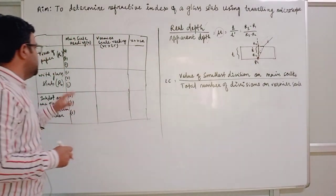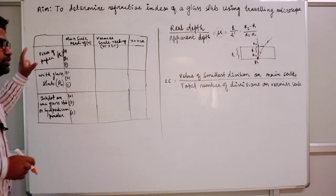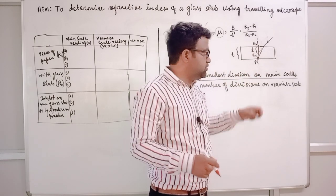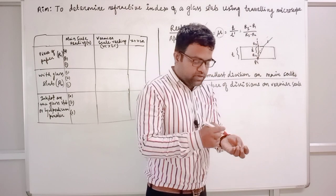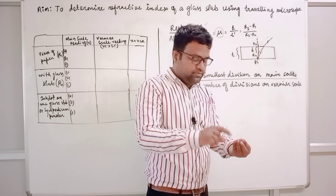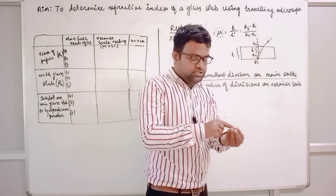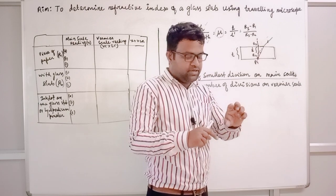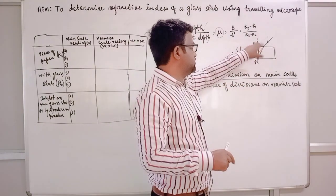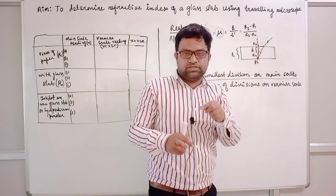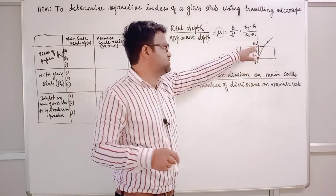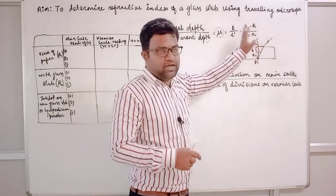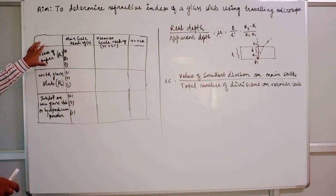We need three points. First, without the glass slab, we focus the point with the microscope — that is R1, the direct object without any medium. When the glass slab is placed, the object appears a little above its original position — that is the apparent height. To calculate the apparent height and real height, we need the thickness of the slab, so we put a marker or ink dot on the surface of the glass slab.